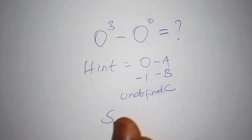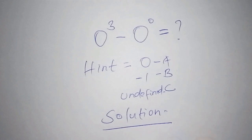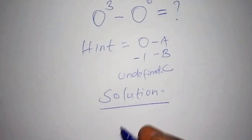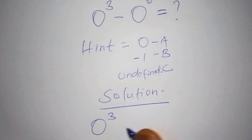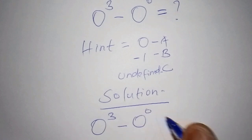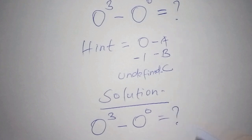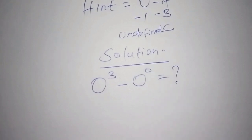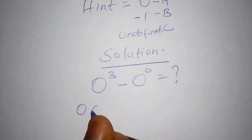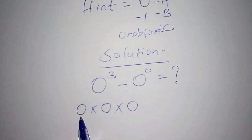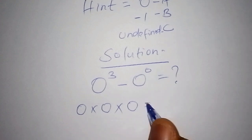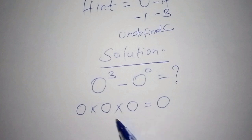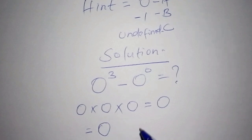Let us now start with the solution. We have 0 to the power of 3, minus 0 to the power of 0. Starting with 0 to the power of 3: this means you multiply 0 three times. When you multiply 0 three times, you still end up with 0. So 0 to the power of 3 equals 0.